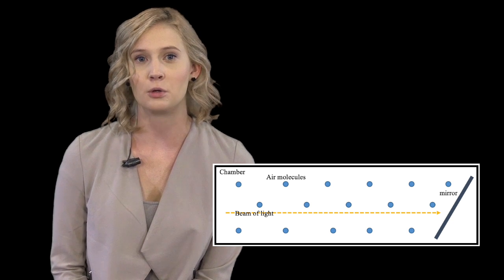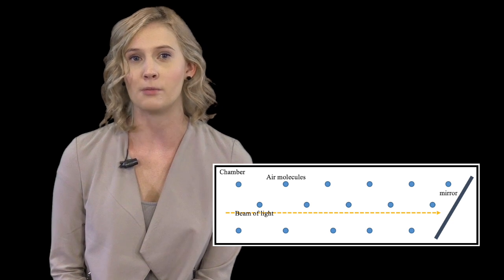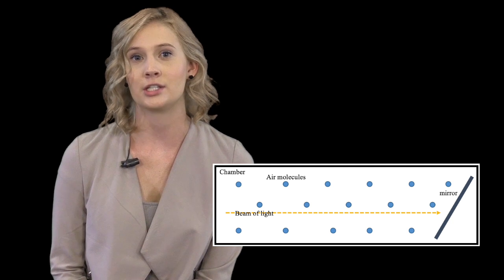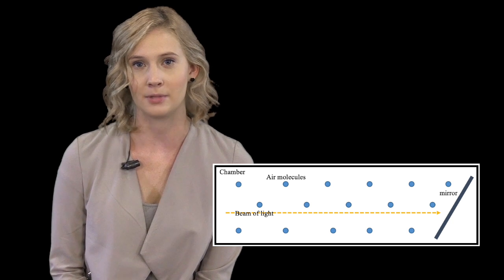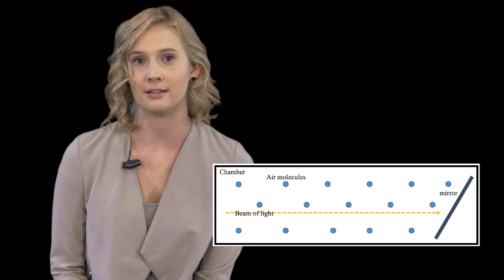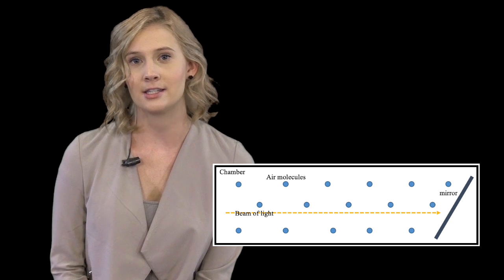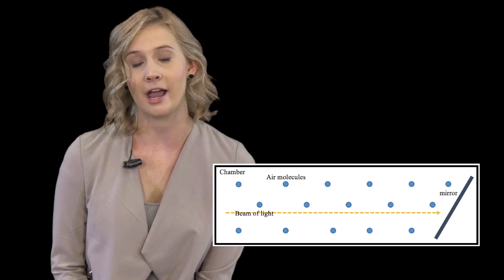When the air in the chamber is cooled to its dew point, dew will form on the mirror. The dew, which is just a collection of very tiny water droplets, blocks some of the incoming light. The light detector can sense this blocking of the light, indicating the air reached its dew point.